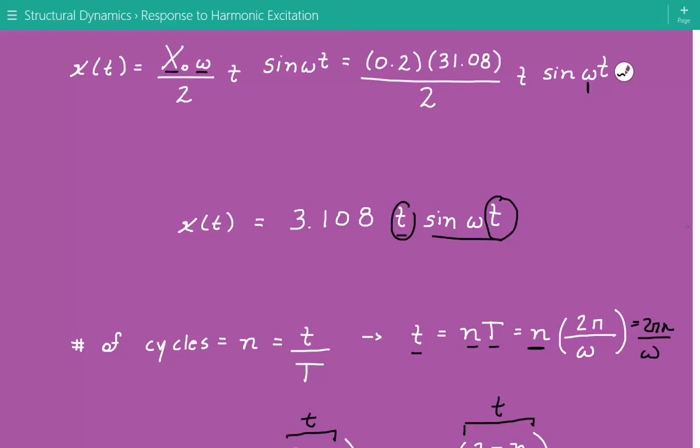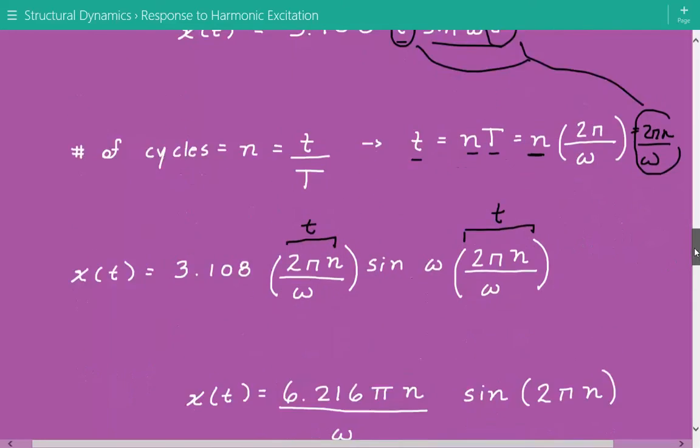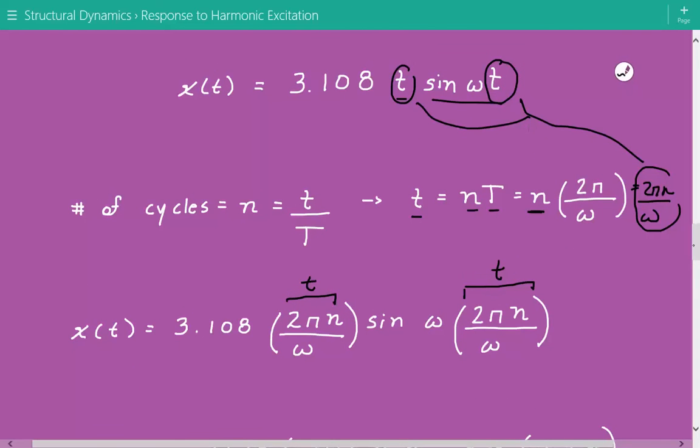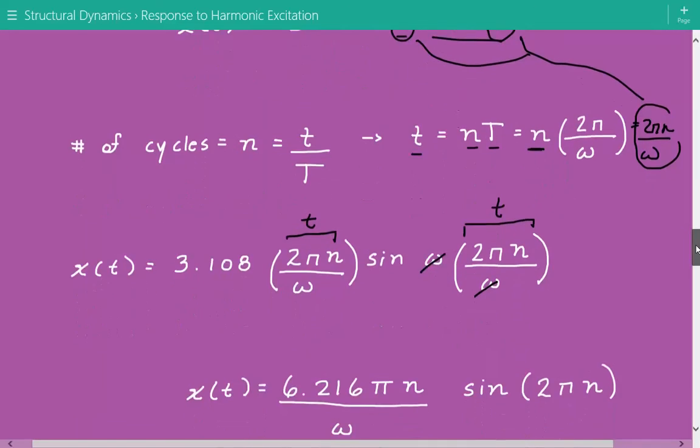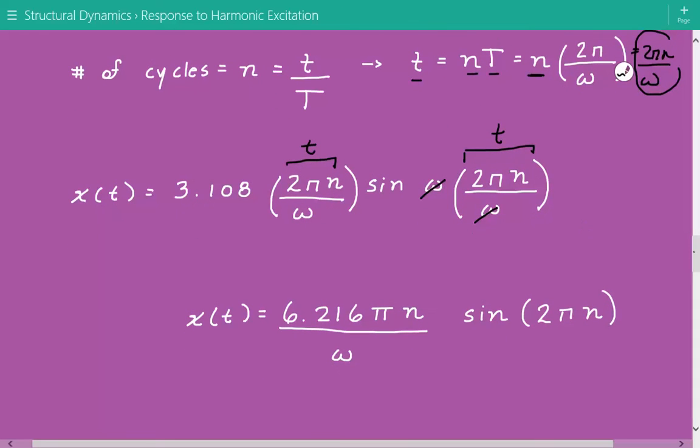Now we take this expression and plug it into the two locations of t. So 3.108 times 2 pi n divided by omega times sine of omega times 2 pi n divided by omega. We can see this omega and this omega cancel out, and that's why I didn't input the actual value in earlier steps. Here's what we have: 6.216 times pi times number of cycles divided by omega times sine of 2 pi n.